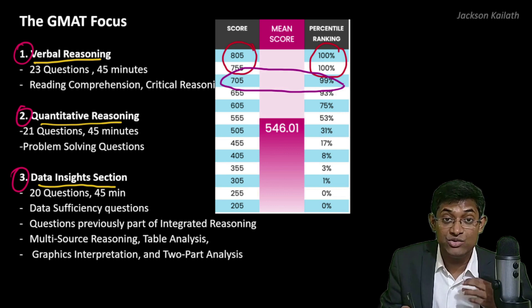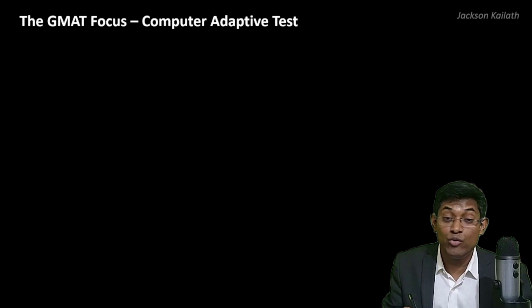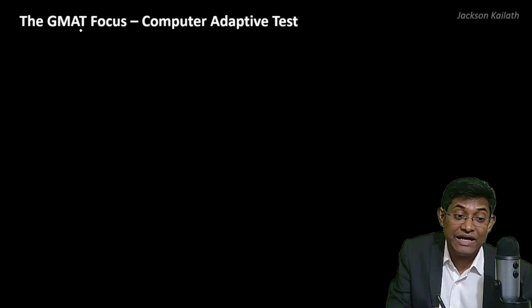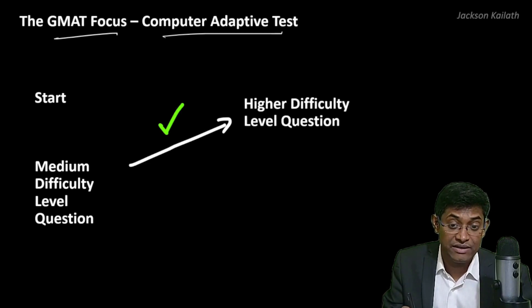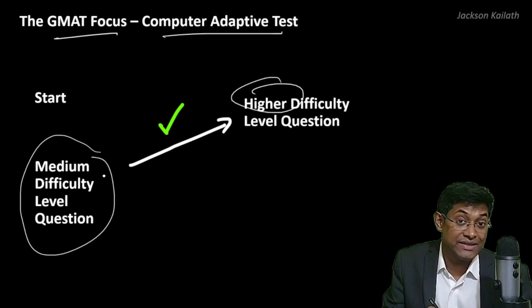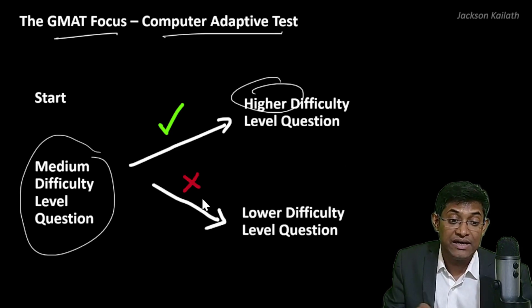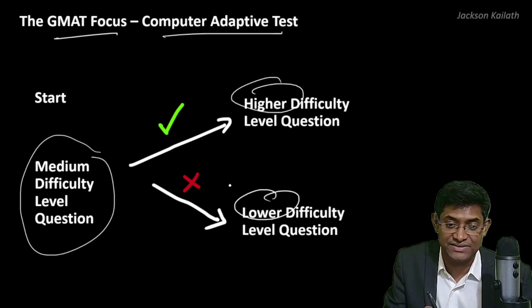Once you get your score, it will be valid for five years. The GMAT Focus is a computer adaptive test. When you start the test, you will be given a question of medium difficulty level. If you get it right, your next question will be of higher difficulty. If you get it wrong, your next question will be of lower difficulty — that is what we mean by a computer adaptive test.